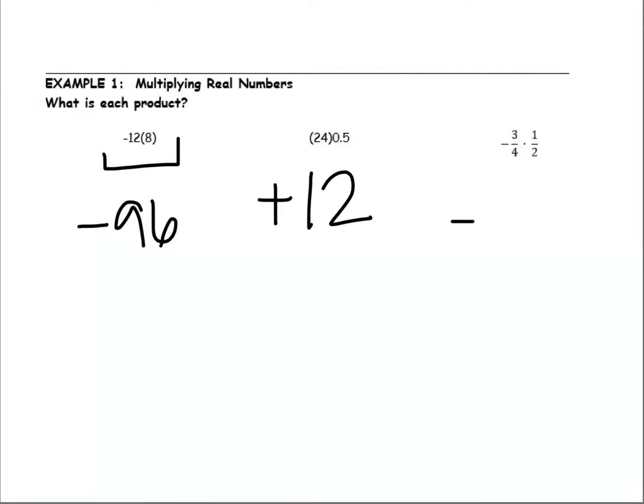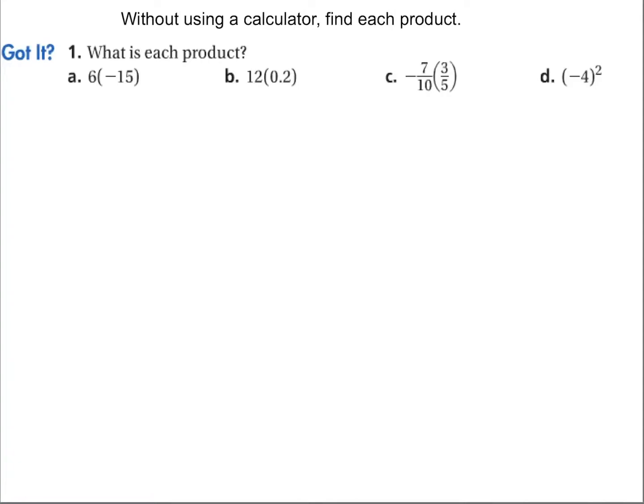Third, here we have a negative times a positive, which means my answer is going to be negative. And when I multiply fractions, I just go straight across. 3 times 1 is 3, 4 times 2 is 8. So negative 3 eighths.